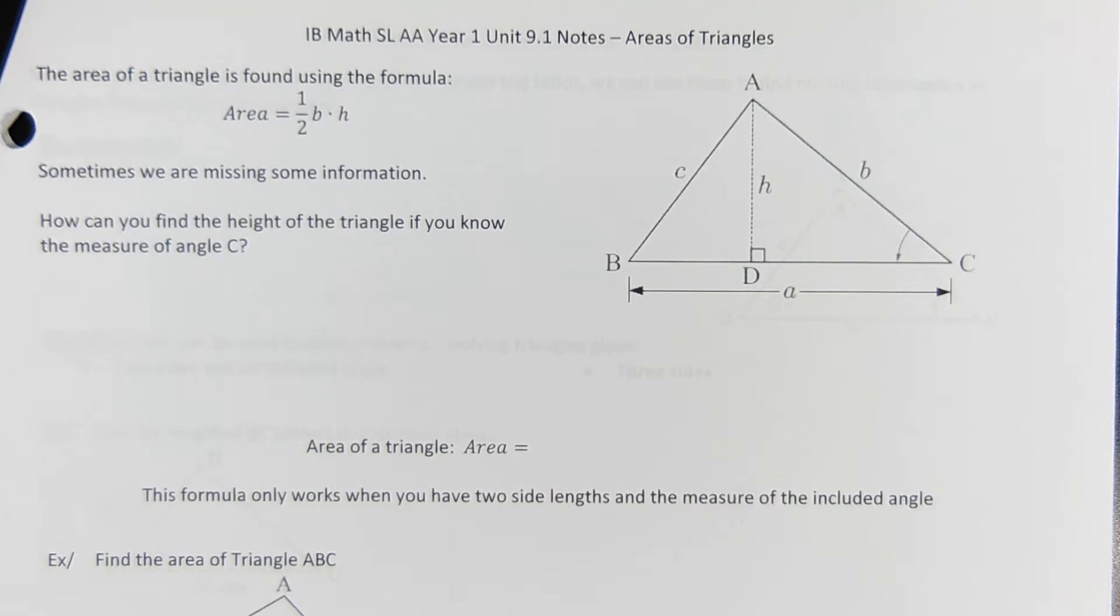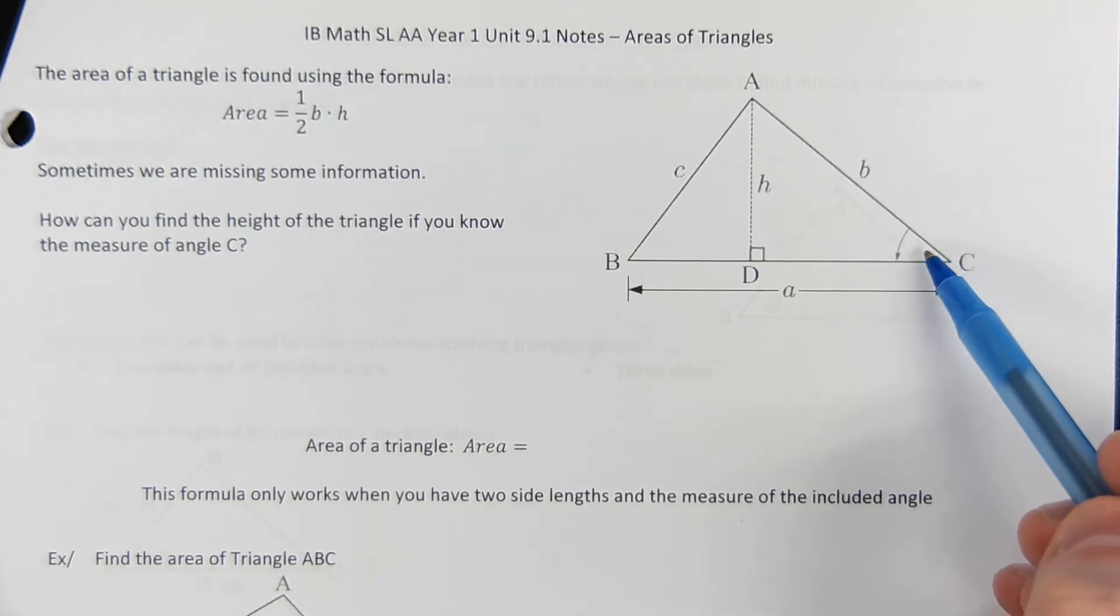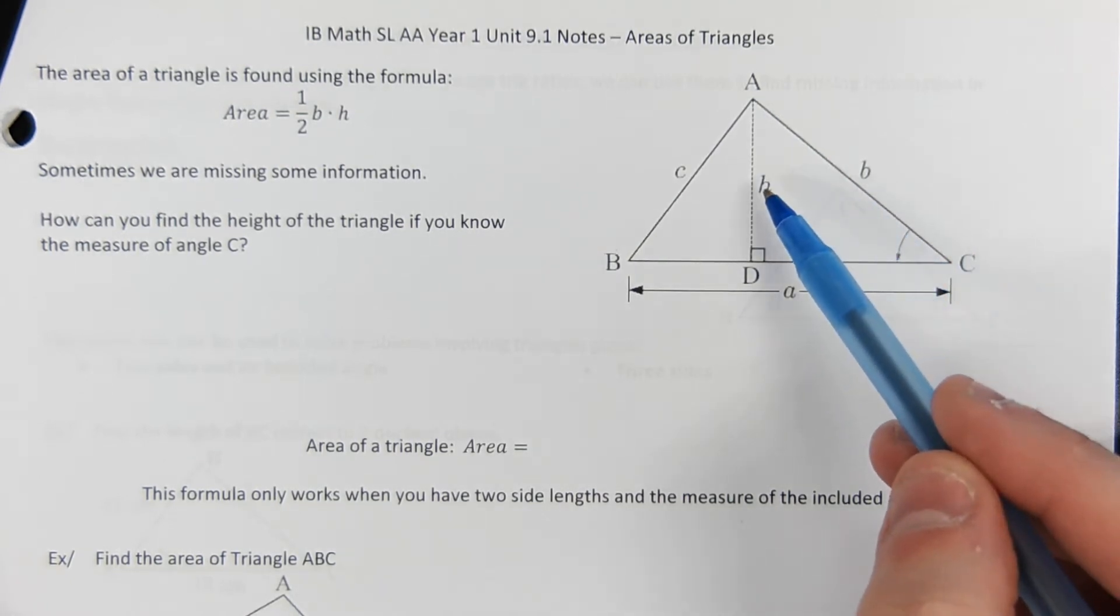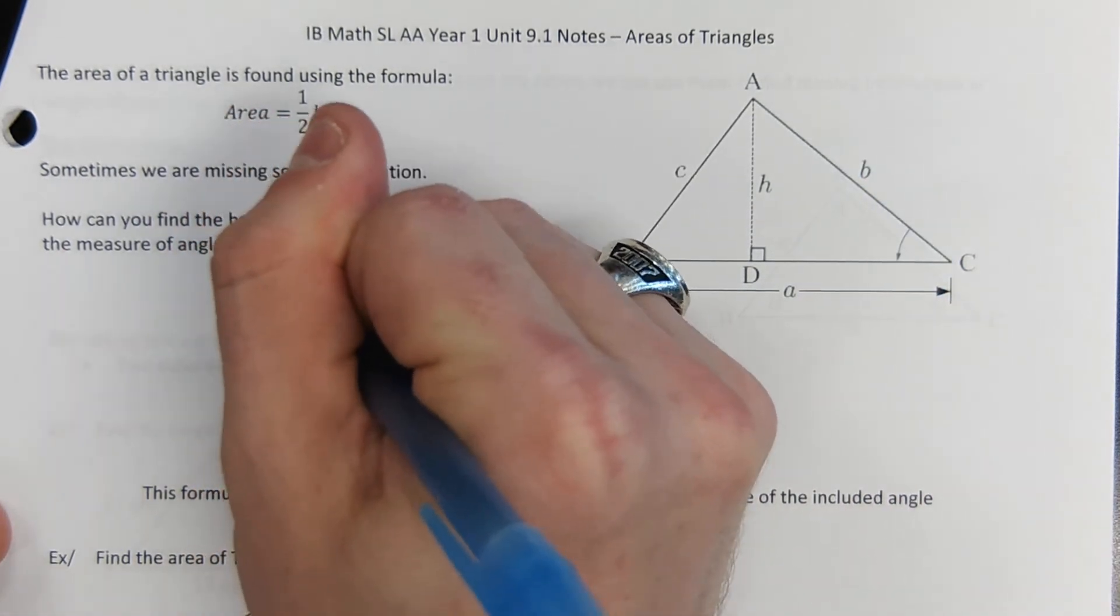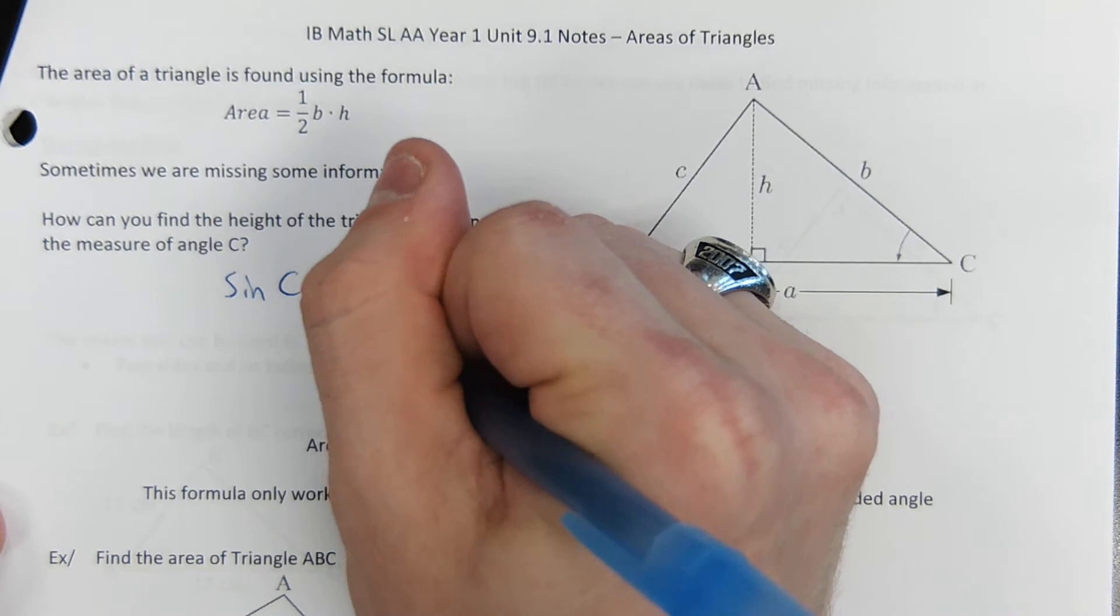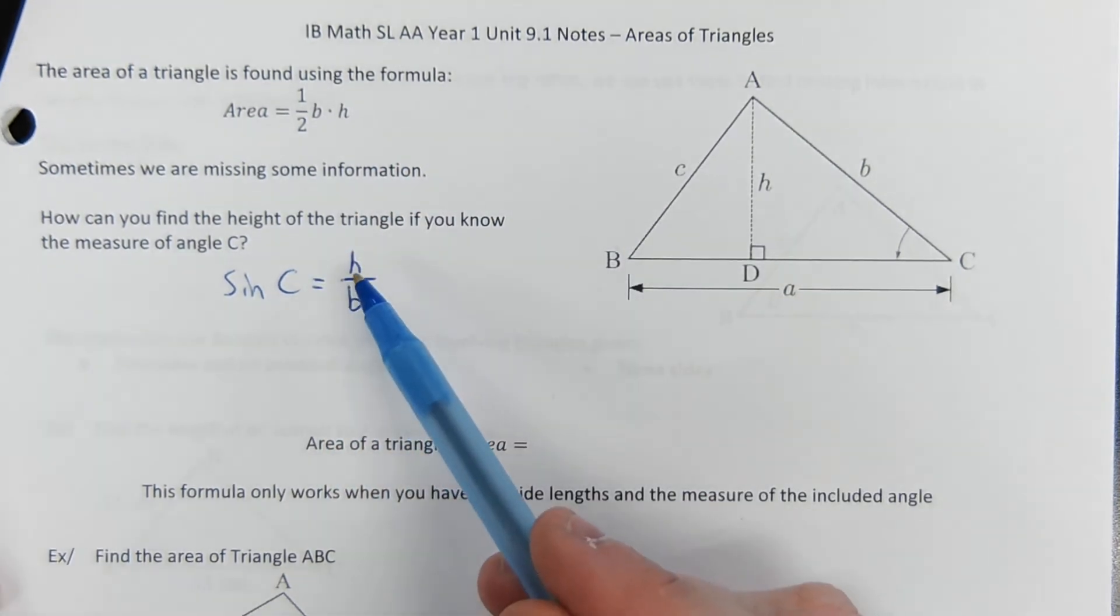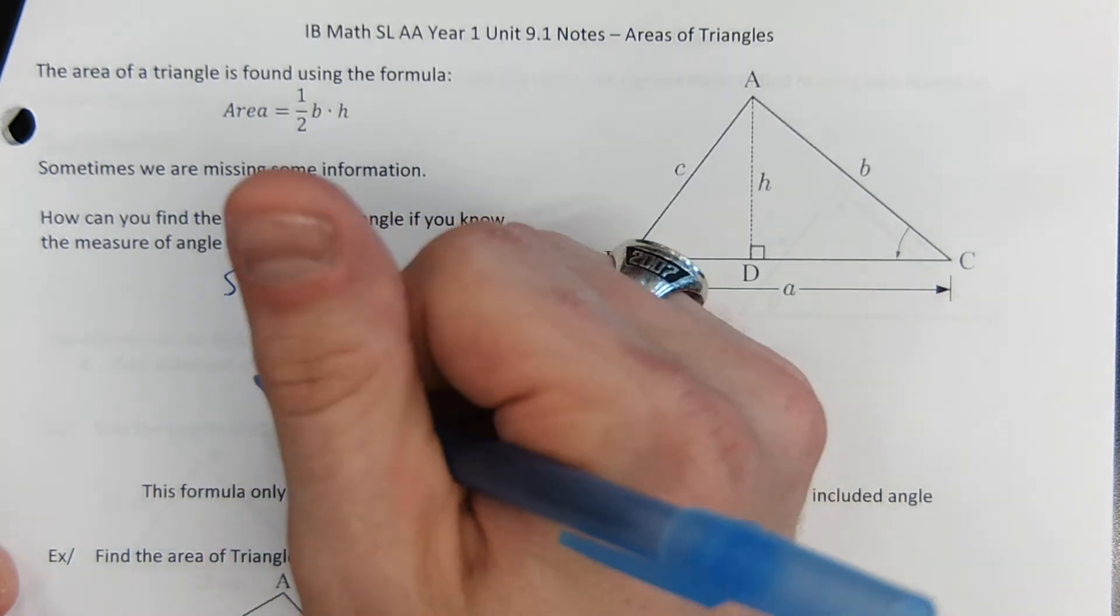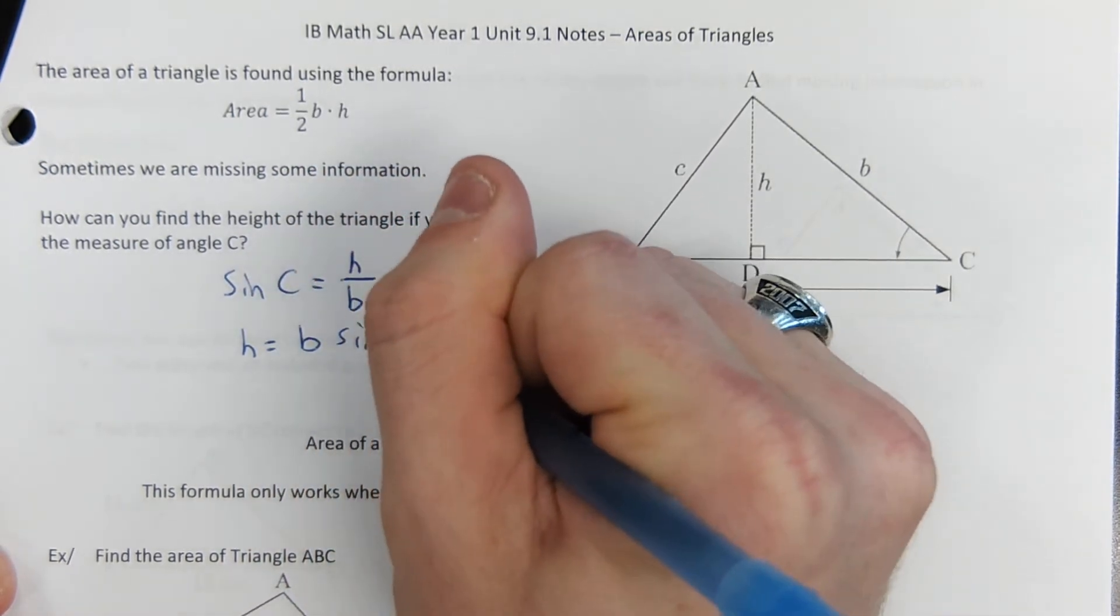Let's say we already know the base. What you could do is you say, I need to know the height of this triangle. If I know angle C from angle C, I could use sine. Sine of angle C would give me opposite over its hypotenuse. So we're talking about this little right triangle right here. Sine of angle C is the opposite side over the hypotenuse. So then the height, if you multiply both sides by B, the height of this triangle is B times the sine of C.